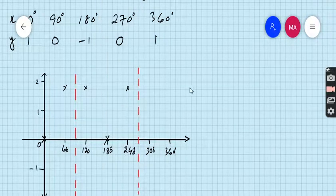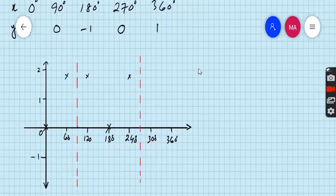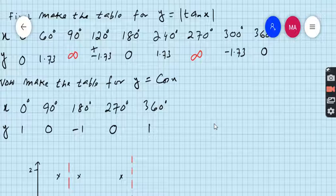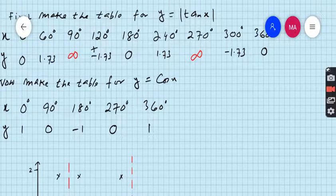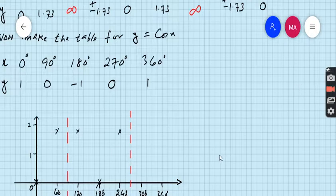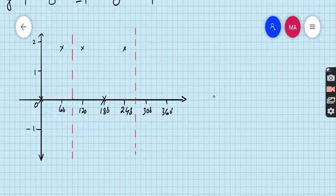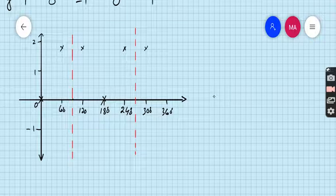For 300 the value is minus 1.73, but because we are drawing absolute valued function, this value should be plus 1.73. And for 360 degrees the value is 0.